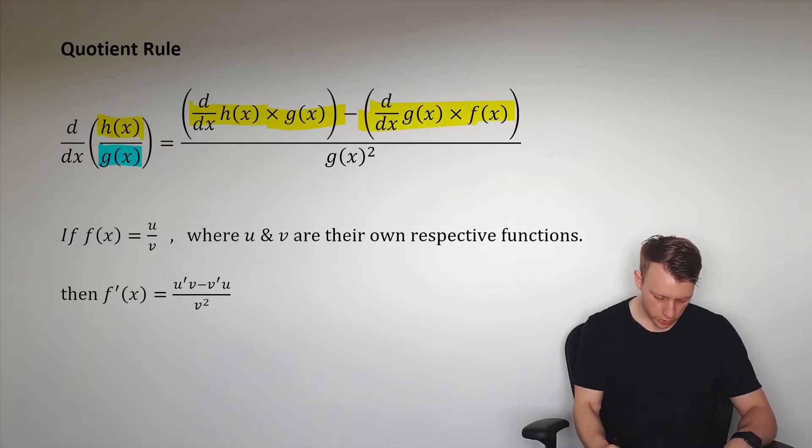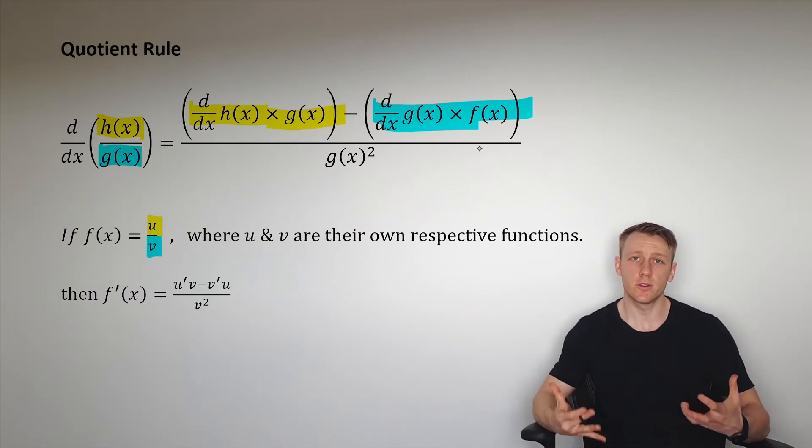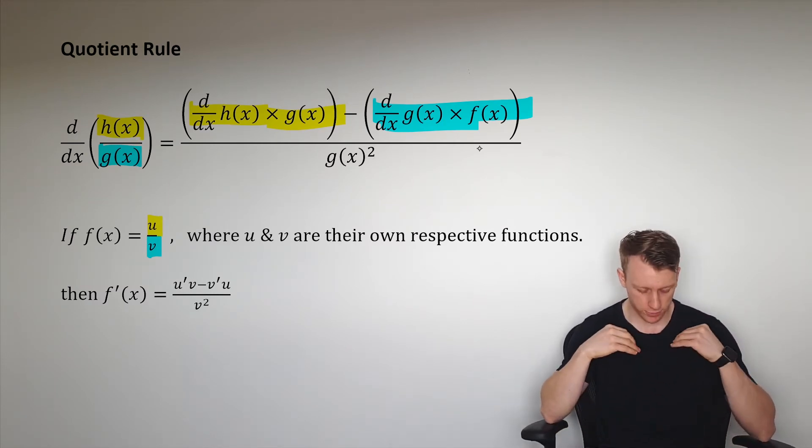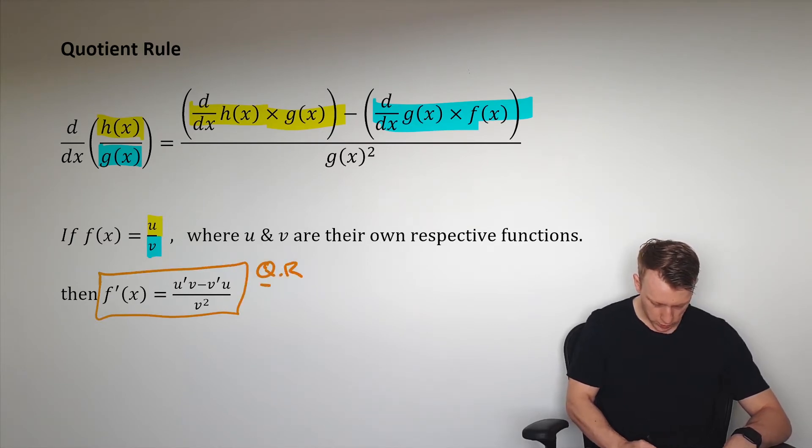So we can simplify it down where we say that g(x) is v and h(x) is u. When we're given a function which can be represented as a function divided by another function, we can calculate the derivative, which is as follows here. This is the quotient rule.